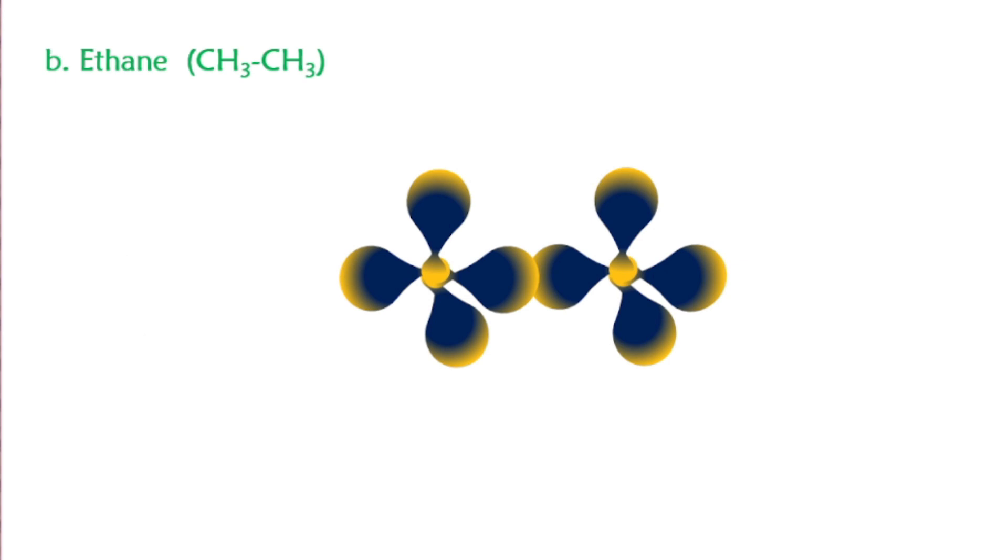Let's take another example: ethane. We also have four sp3 hybridized orbitals. Each individual carbon which has sp3 hybrid orbitals overlaps with hydrogen and forms covalent bonds. This way we have a total of 7 covalent bonds in ethane, and the shape will be tetrahedral.